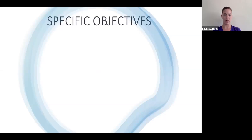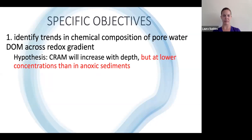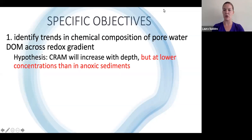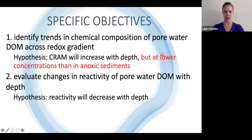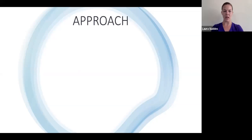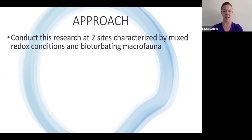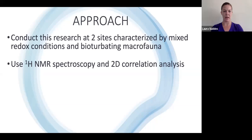I'm endeavoring to answer this question using the following objectives. First, I'll identify trends in chemical composition of pore water DOM across a redox gradient, with the hypothesis that CRAM will increase with depth but at lower concentrations than in anoxic sediments. Then I will attempt to evaluate changes in reactivity of pore water DOM with depth, with the hypothesis that reactivity will decrease with depth. My approach is to conduct this research at two sites characterized by mixed redox conditions and bioturbating macrofauna, and to use proton NMR spectroscopy and 2D correlation analysis to explore significant changes with depth.